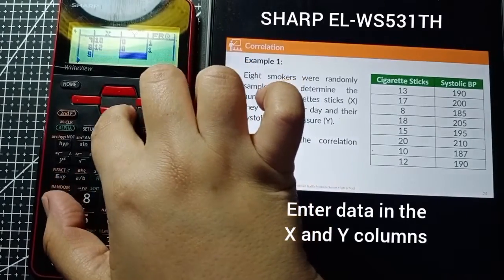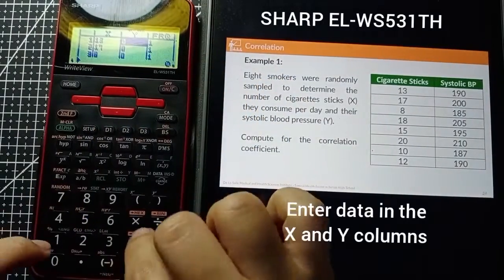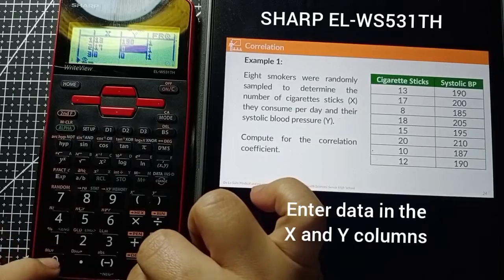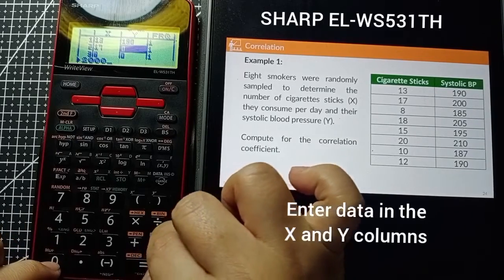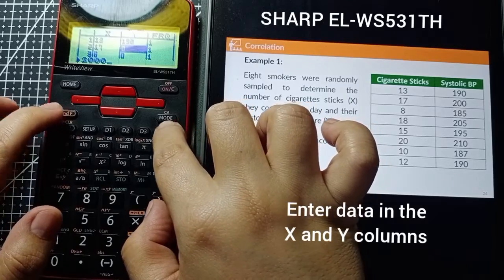Proceed to the Y column. The same thing: just press on the number and then hit equals to save it. Make sure that all the data are correct.